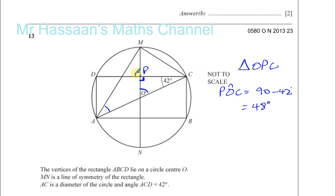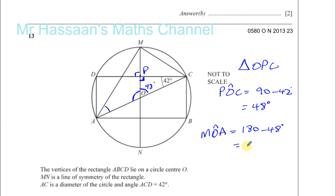Angle POC is 48 degrees. The angle on the other side — angle MOA — is going to be 180 minus 48, because this is a straight line. So MOA = 180 − 48 = 132 degrees. We can verify: 132 plus 48 gives us 180. Correct.